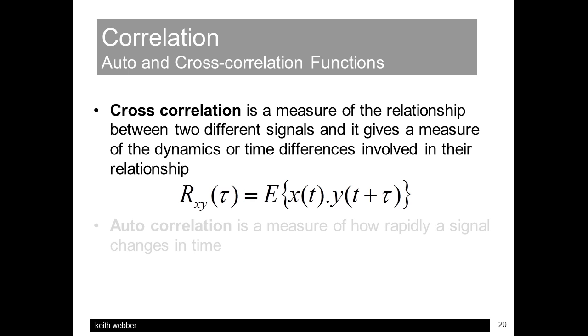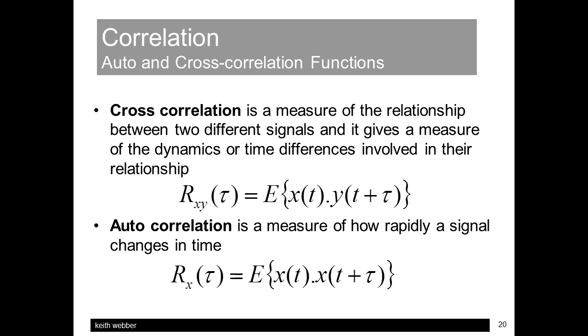So far, we've looked at the correlation between two different signals. This is called cross-correlation. Now consider what would happen if instead of applying the correlation formula to two signals, we apply it to just one signal. This is the autocorrelation function, the correlation of a signal with itself. It's a time domain measure of how rapidly a signal changes.